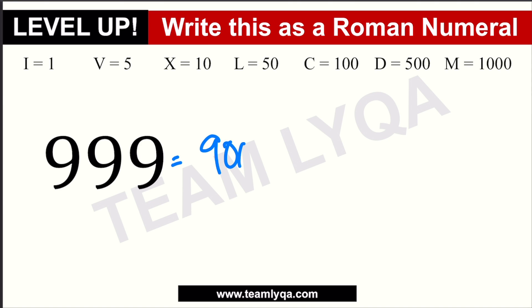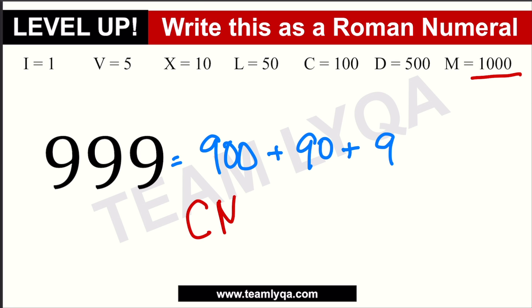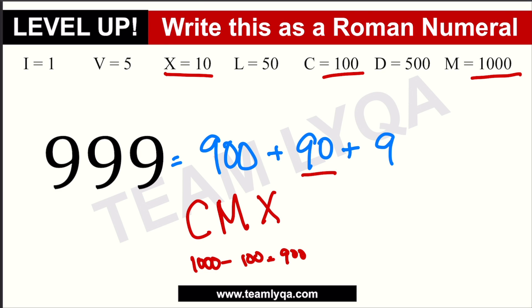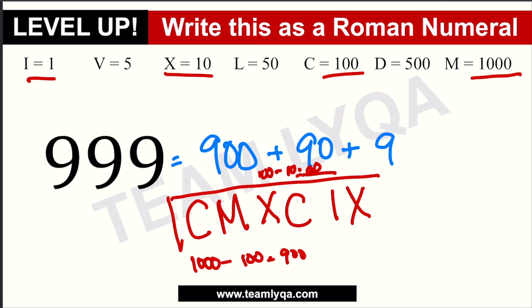We break 999 into its parts: 900 plus 90 plus 9. For 900: that is 1,000 minus 100, and since 100 times 10 equals 1,000 — it's not more than 10 times greater — we can use it. So 900 is CM. For 90: that is 100 minus 10, which is XC. For 9: that is 10 minus 1, which is IX. Therefore, 999 is written as CMXCIX.